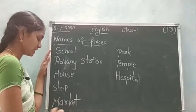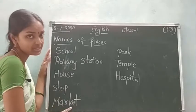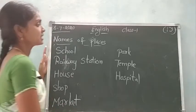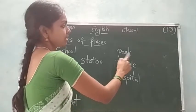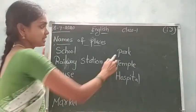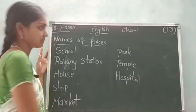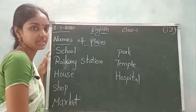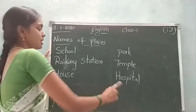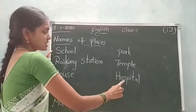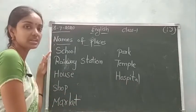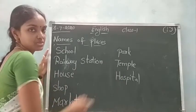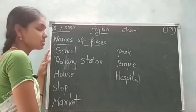Market, M-A-R-K-E-T, market. Next: park, P-A-R-K, park. Temple, T-E-M-P-L-E, temple. Hospital, H-O-S-P-I-T-A-L, hospital. Okay children, these are some names of places. These are nouns.